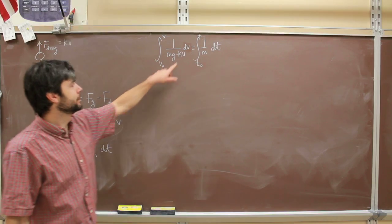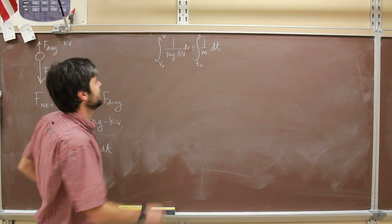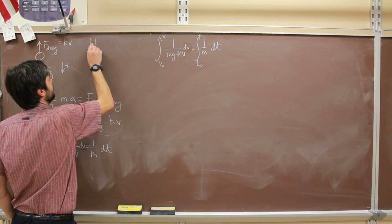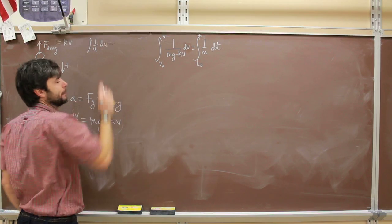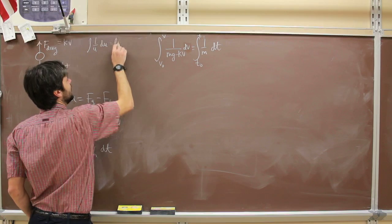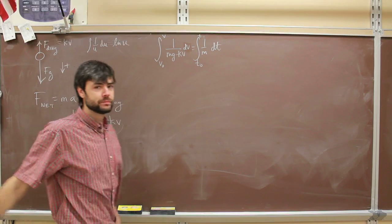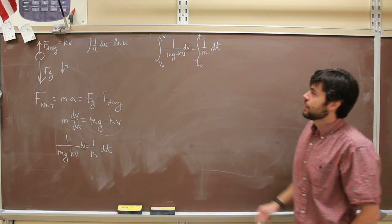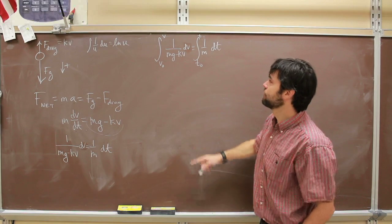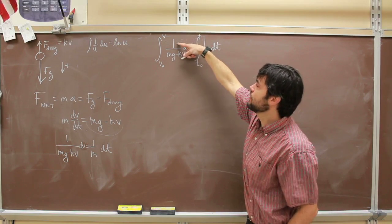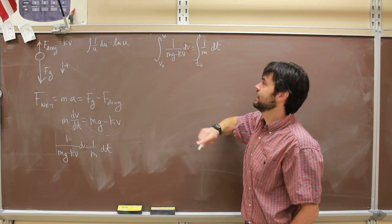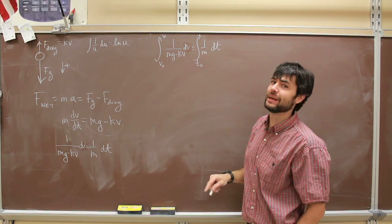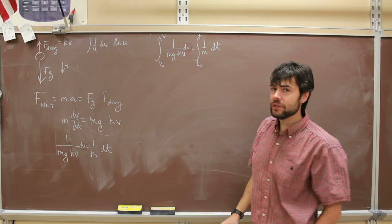I know that the integral of 1 over u du is the natural log of u. That's an integral that you can look up, or maybe you just want to memorize it. And I don't have this in that form. This is 1 over mg minus kV dv. If that was a v, then I'd be all set. But it's not. It's an mg minus kV. So what I'm going to do is a little trick.